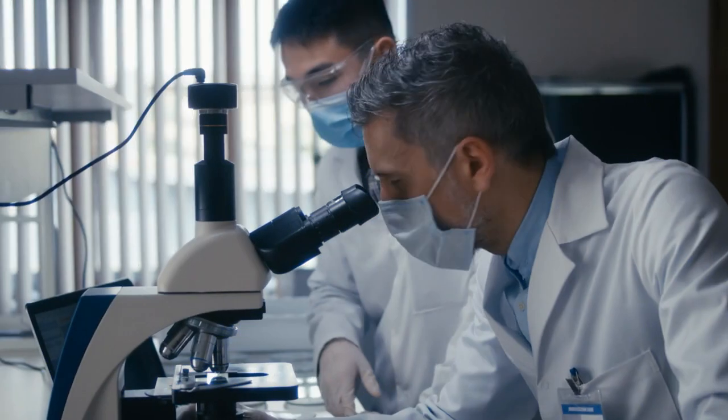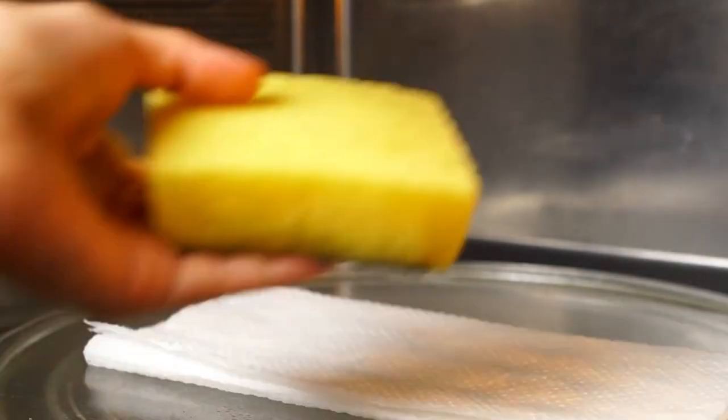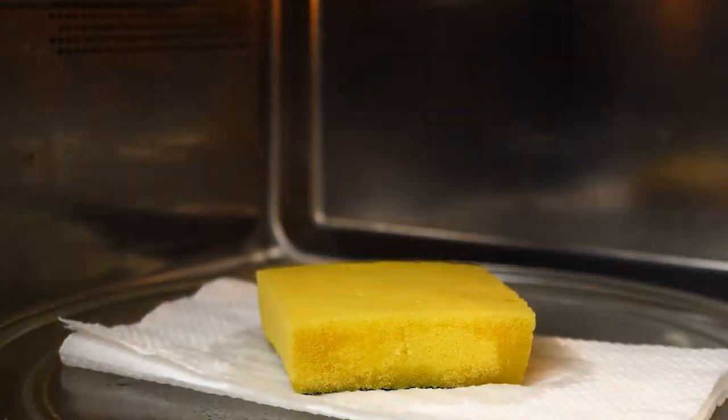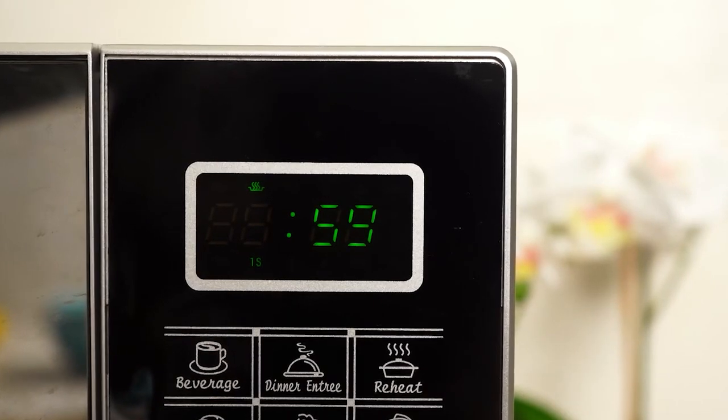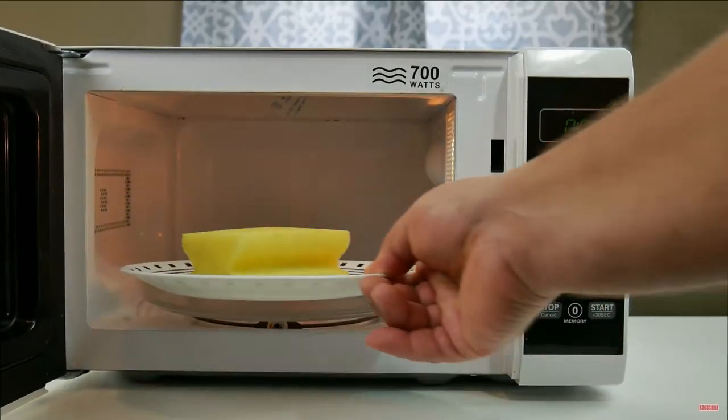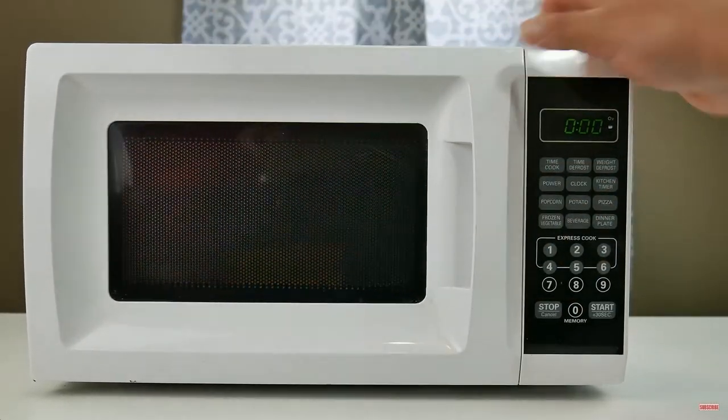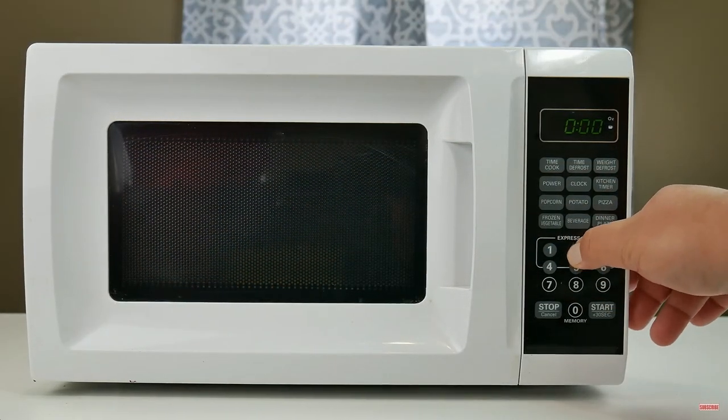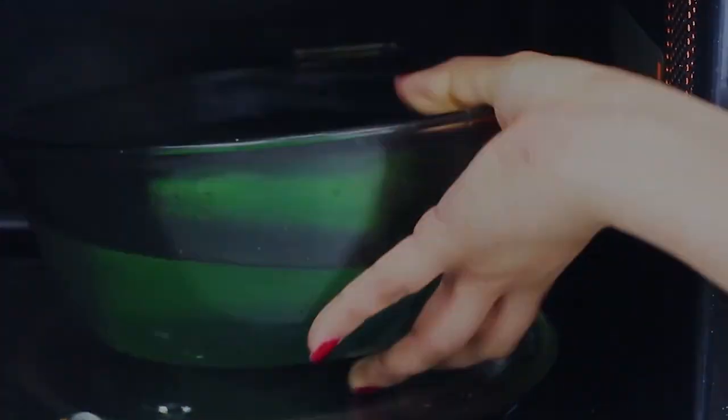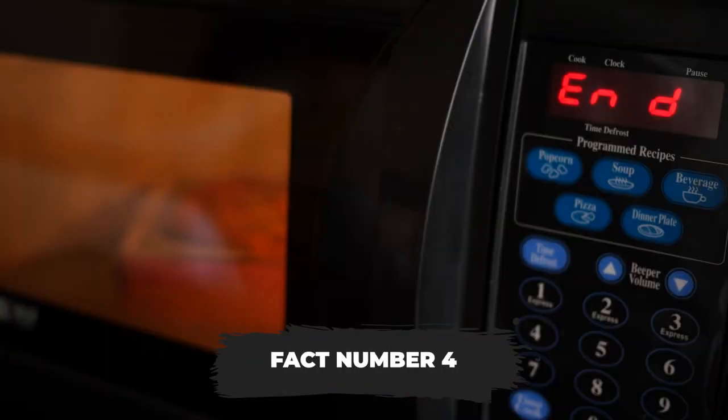Fact number three: Did you know microwaves can actually help with hygiene beyond cooking? Researchers have found that microwaving kitchen sponges can kill bacteria, making them one of the unexpected heroes in household hygiene. Just make sure the sponge is wet and microwave it for about a minute to zap those germs away. Just be careful when you take it out because it will be hot.